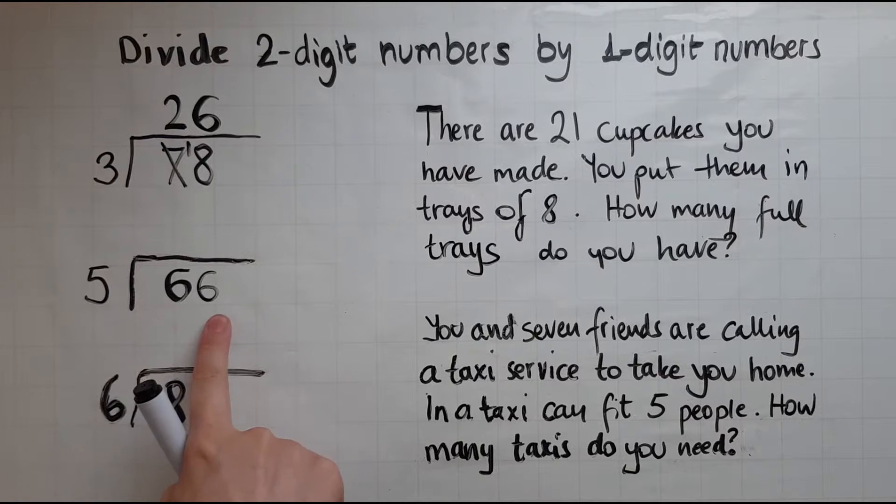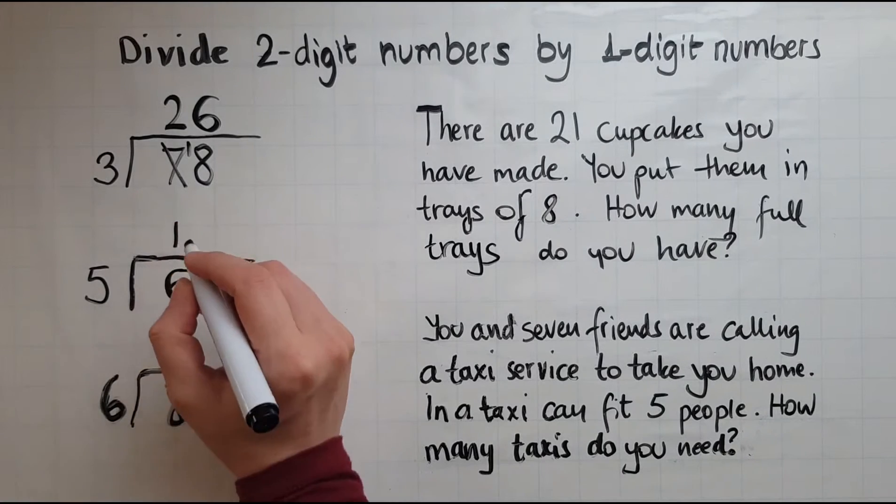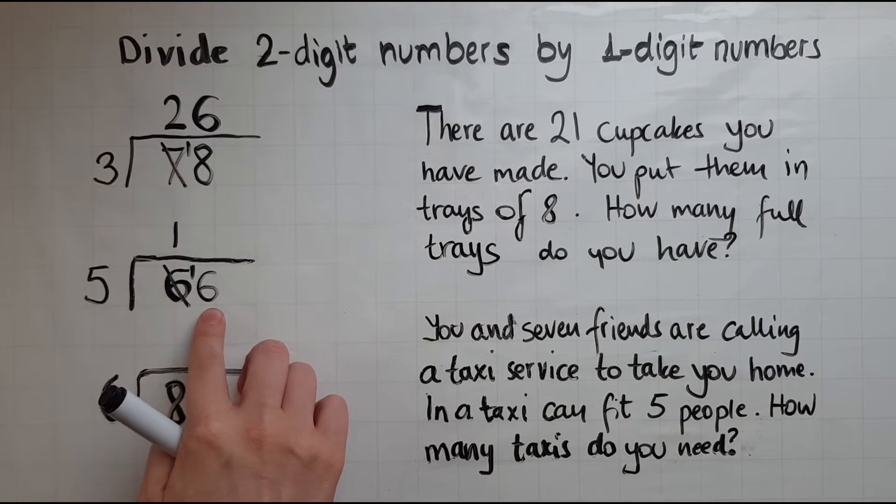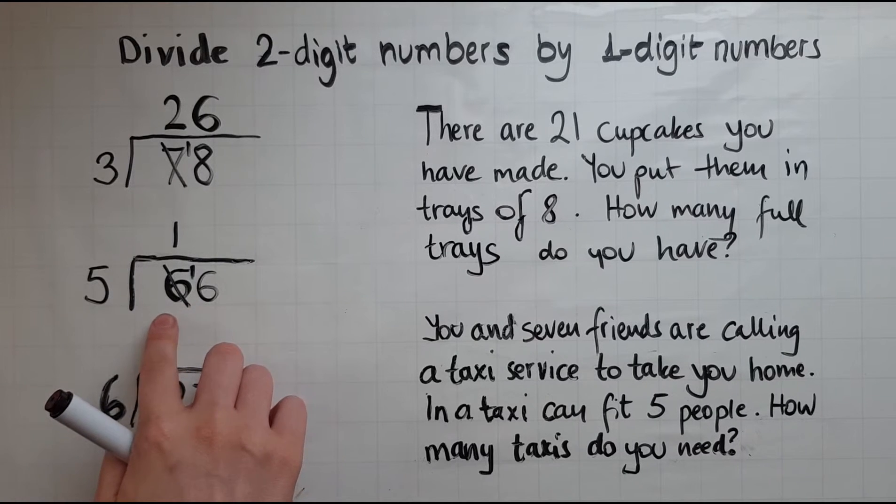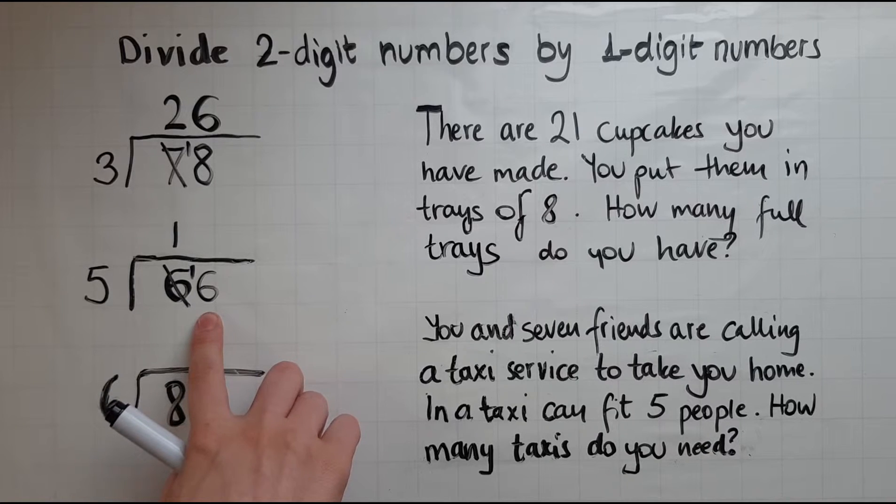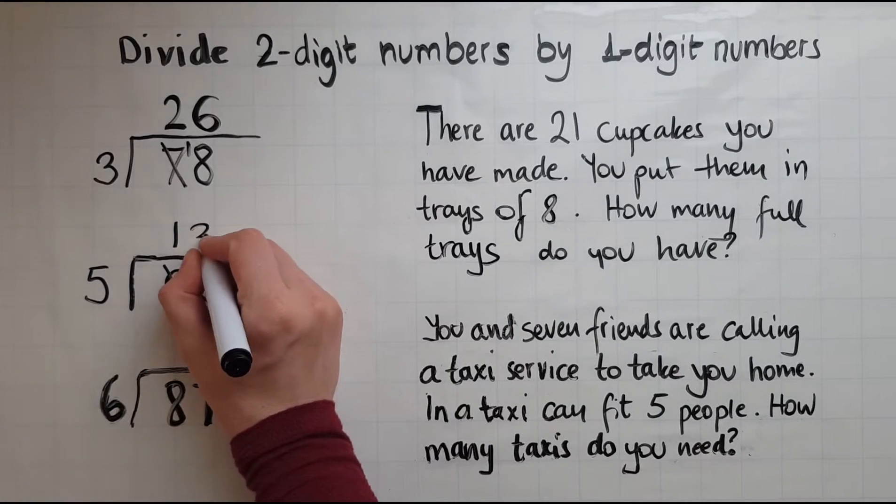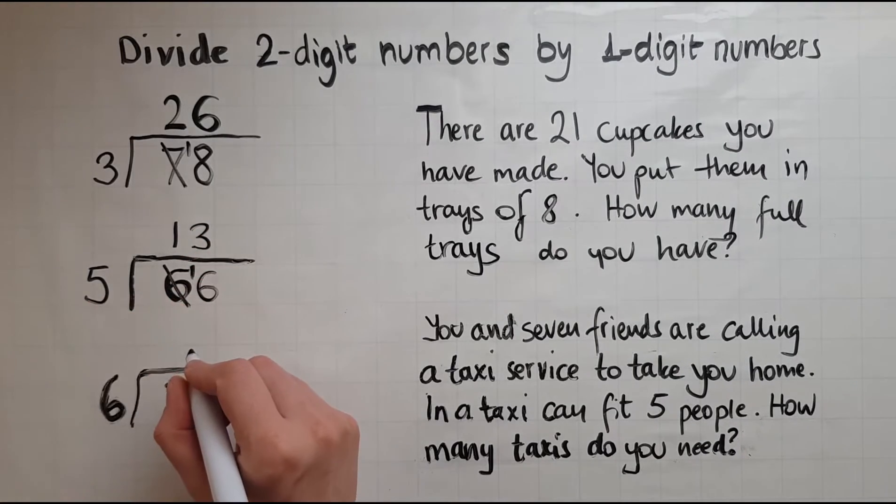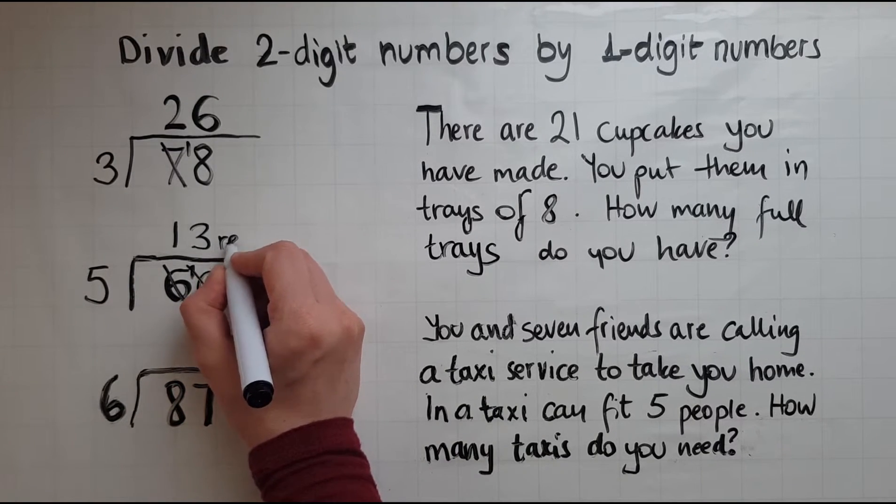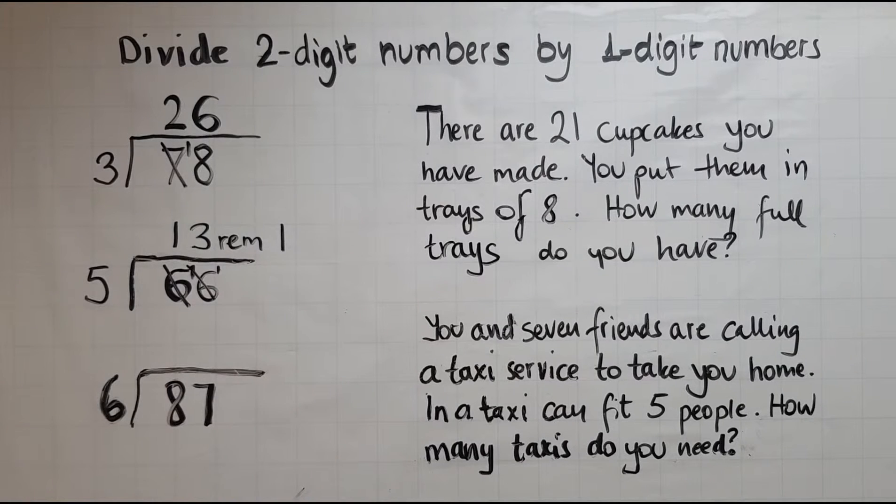Now I've got 66 divided by 5. So how many 5's would fit into 6? That is just 1, and there is 1 left. So that 1, 10 is transferred to the unit to make 16. So how many 5's now fit into 16? And that is 3. Because 3 times 5 is 15, but there is 1 left. So I'll say remaining 1. So the answer is 13 remaining 1.